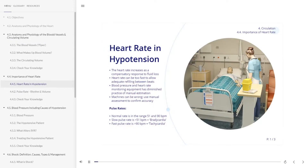The body's normal compensatory mechanism to maintain normal cardiac output from fluid loss is to speed up the heart rate. In theory, an increase in heart rate will support a reduction in stroke volume in order to maintain an adequate cardiac output. However, very fast heart rates can cause a reduced cardiac output as ventricular filling time is vastly reduced.